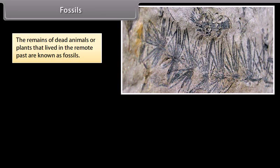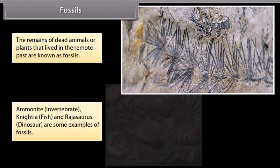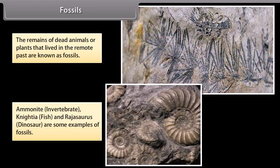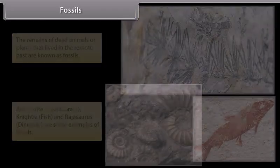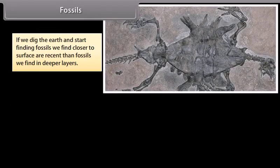The remains of dead animals or plants that lived in the remote past are known as fossils. Ammonite, invertebrate, Nicaea, fish, and Rajasaurus dinosaur are some examples of fossils. If we dig the earth and start finding fossils, we find that those closer to the surface are more recent than fossils found in deeper layers.